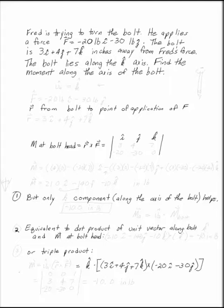We know that the bolt is 3I plus 4J plus 7K inches away from the force and that the bolt lies along the K axis. So our bolt is straight up and down. What we need to do is figure out what the moment is because we're trying to turn the bolt.